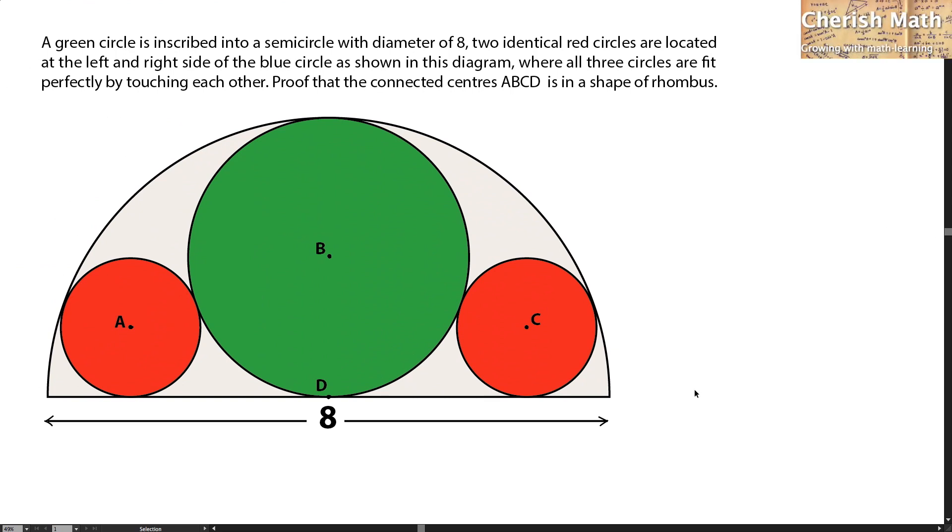Hi from Cherish Math. This is the question. A green circle is inscribed into a semicircle with diameter of 8. Two identical red circles are located at the left and right side of the green circle as shown in this diagram, where all three circles fit perfectly by touching each other. Prove that the connected centers ABCD is in the shape of a rhombus.